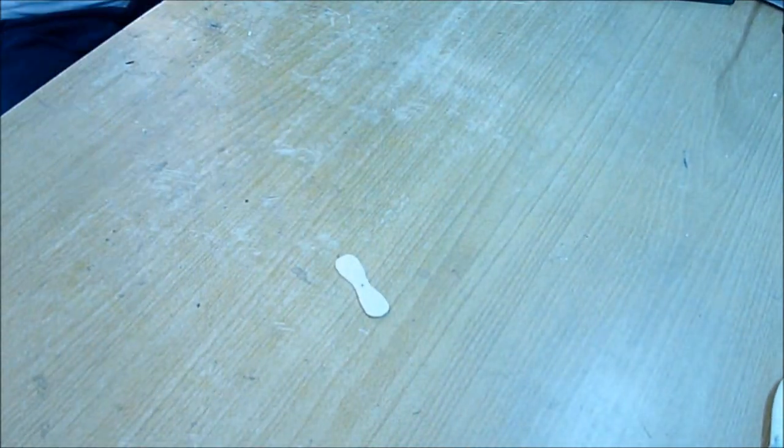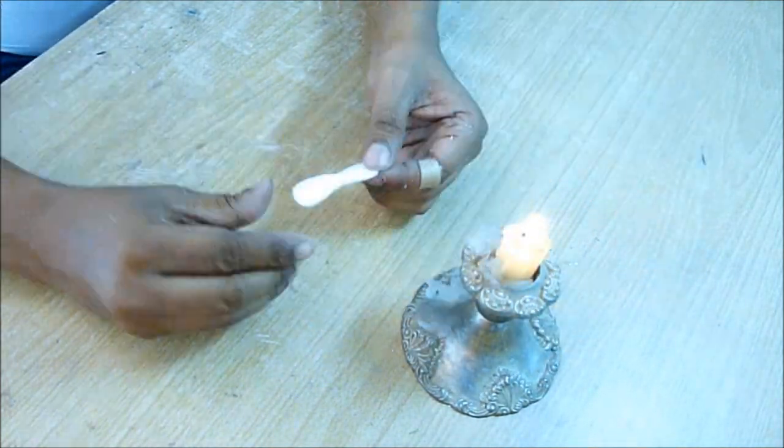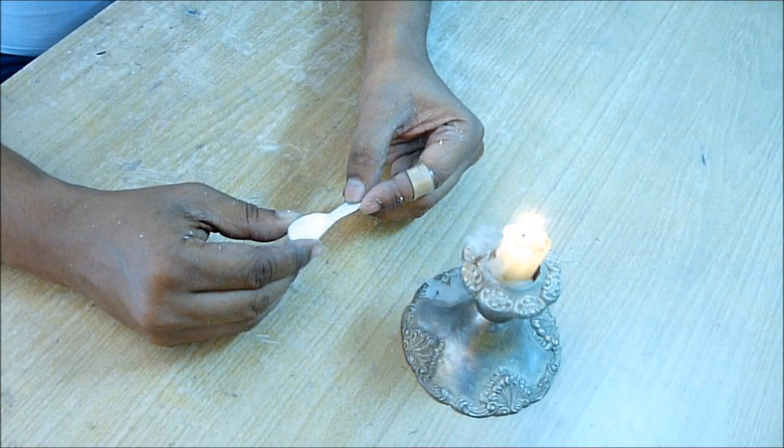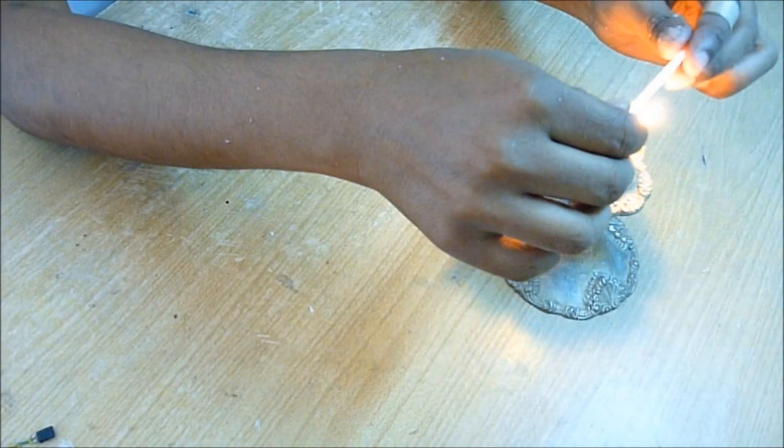Now hold that around one inch up from a candle. When it is a little melted, twist both ends in opposite directions. Thus your propeller is ready.